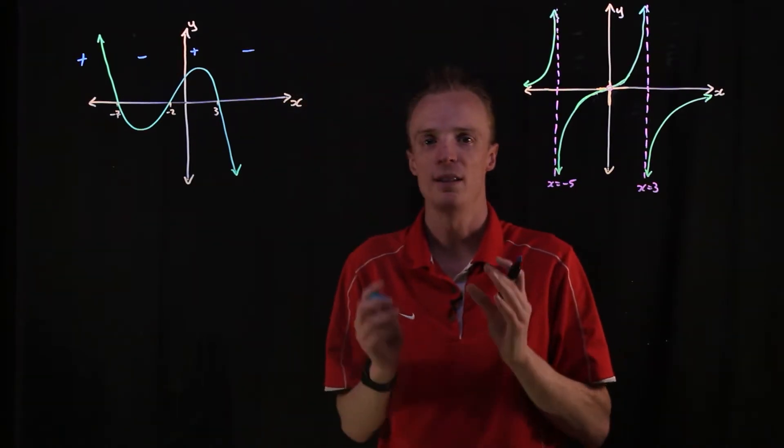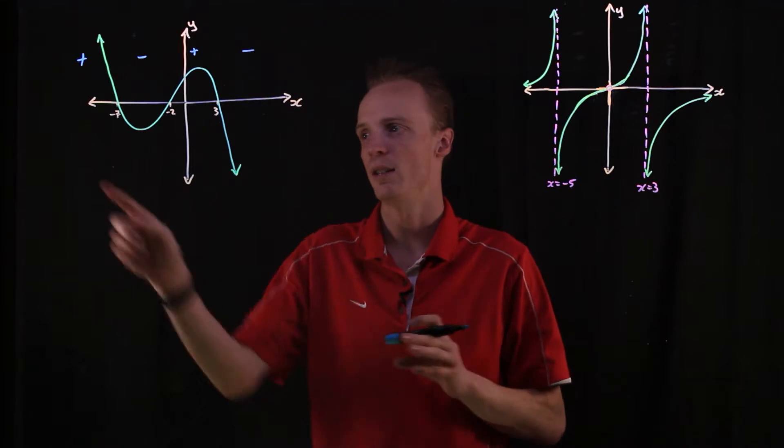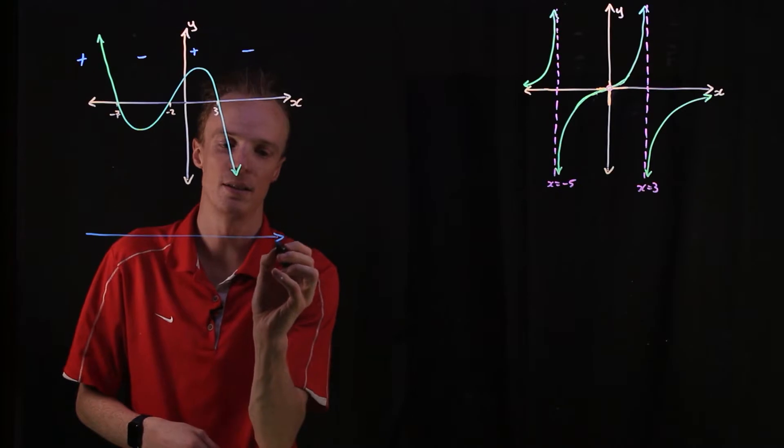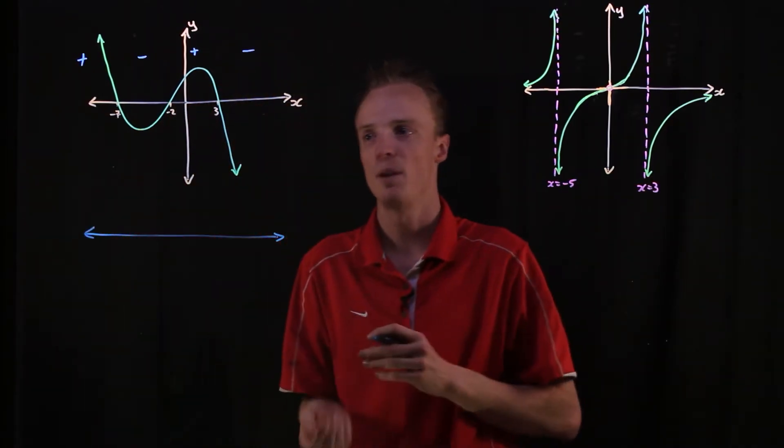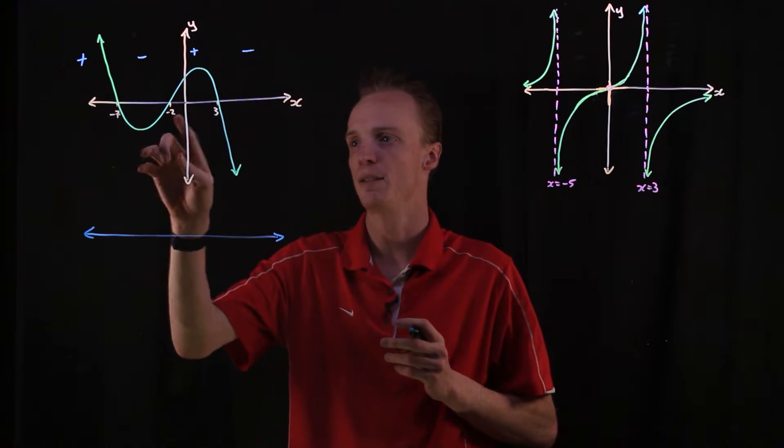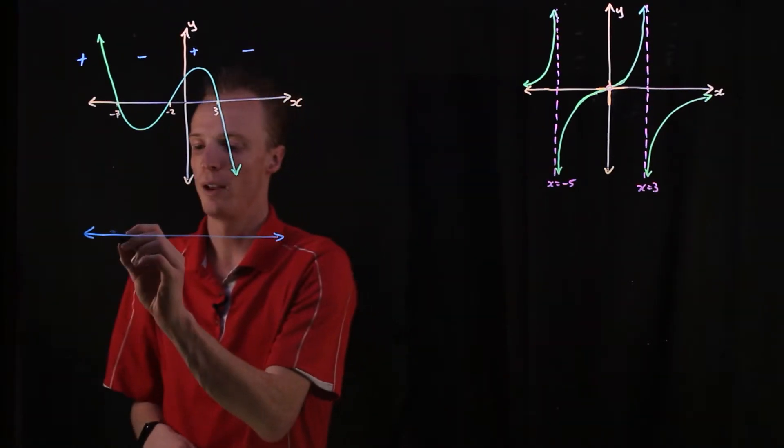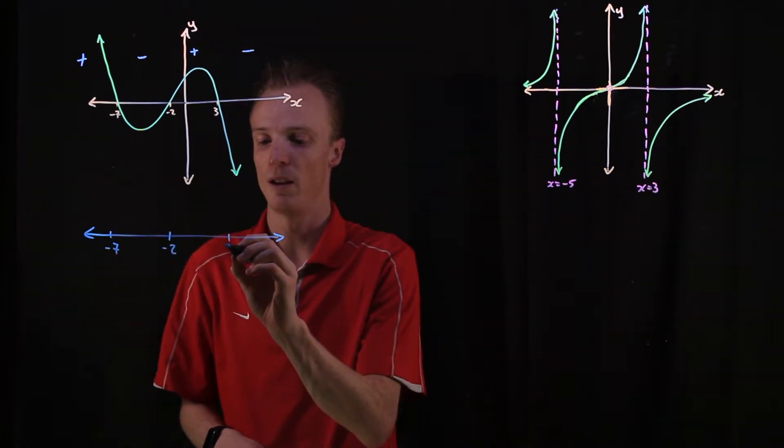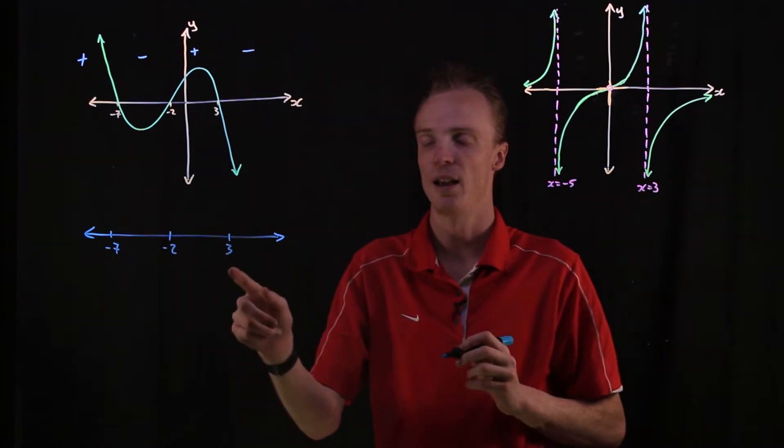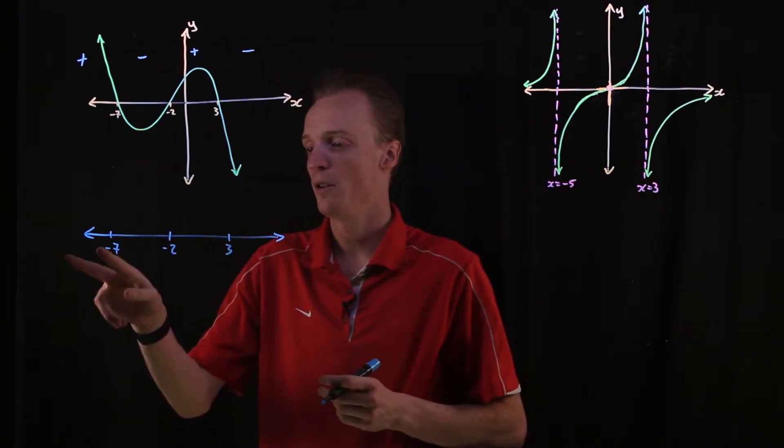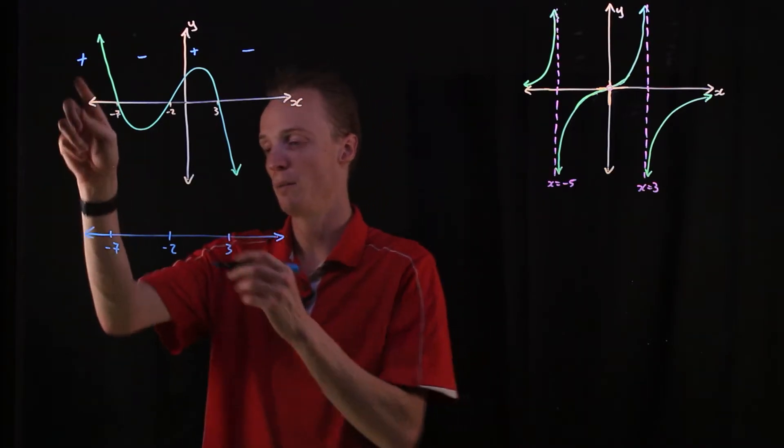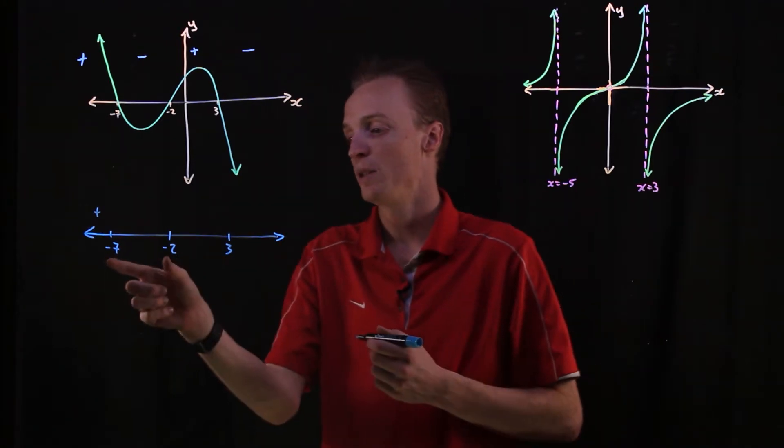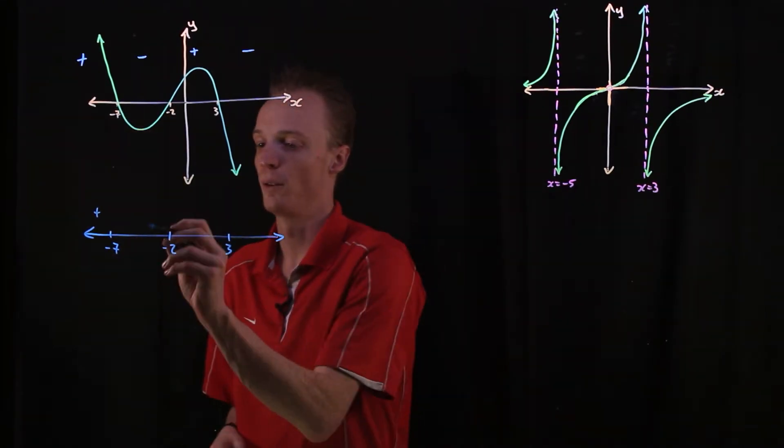So what we in essence want to do is we want to show this just using the x-axis essentially. So we redraw an x-axis like this and we start by putting the important piece of information down, these intercepts down. So we know that it passed through at negative 7, at negative 2 and at positive 3. And you don't have to worry about scales here with sign diagrams. So we know that before negative 7 that's going to be positive, the graph itself, it's going to be above the x-axis. In between negative 7 and negative 2, it's below the x-axis, so it's negative.